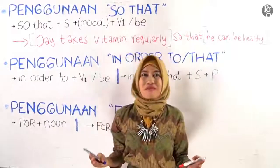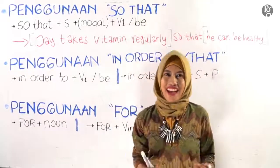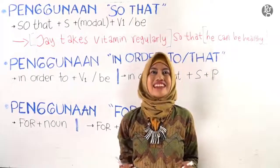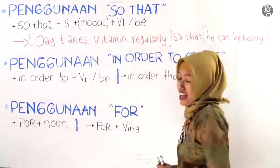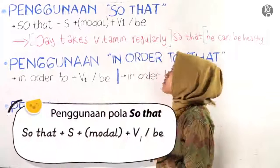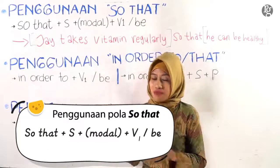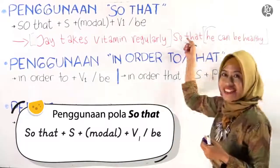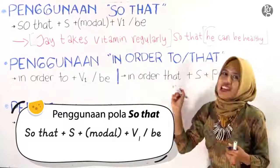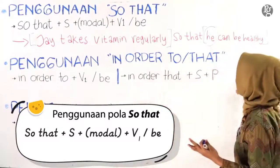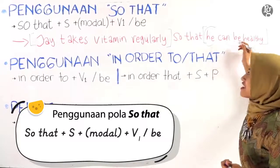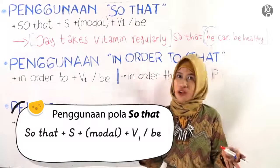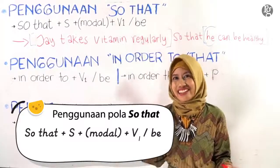Jadi 'so that' di sini bermakna supaya atau sehingga. Jai meminum vitamin secara rutin sehingga dia bisa sehat. Polanya pada kalimat ini: kalian bisa menggunakan 'so that' kemudian diikuti dengan subjek. Di sini subjeknya adalah 'he'. Jadi setelah 'so that' diikuti dengan subjek atau 'he'. Kemudian, kalian bisa mengikutinya dengan modals: 'can'. Kenapa kakak kasih tanda kurung di sini? Karena kalau kalian enggak menggunakan modals enggak apa-apa, tapi harus diikuti dengan kata kerja selanjutnya.